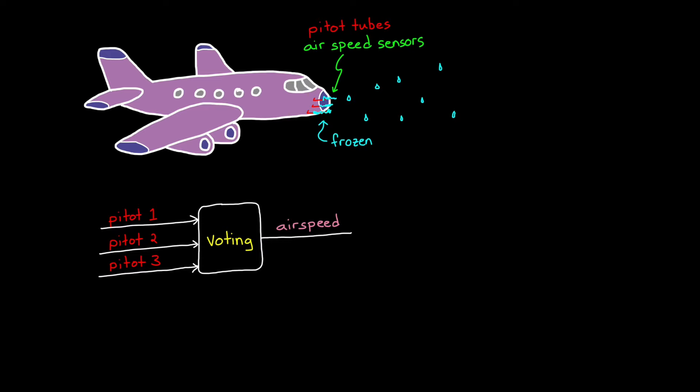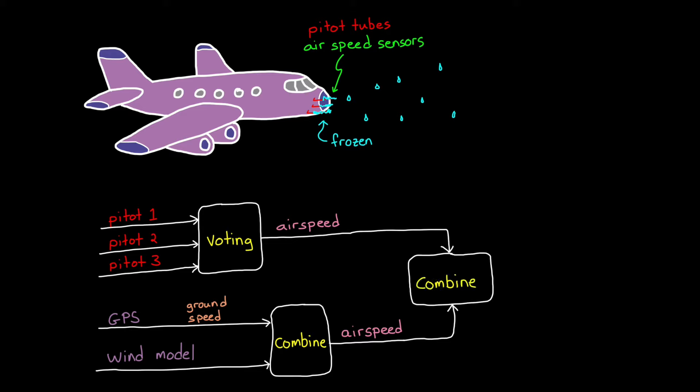Again, this is where fusing together sensors that measure different quantities can help the situation. The aircraft could be set up to supplement the airspeed measurements from the pitot tubes with an airspeed estimate using GPS and atmospheric wind models. In this case, airspeed can still be estimated when the primary sensor suite is unavailable. Again, quality may be reduced, but the airspeed can still be determined, which is important for the safety of the aircraft.